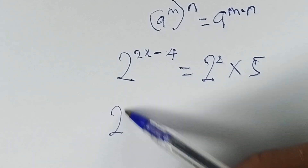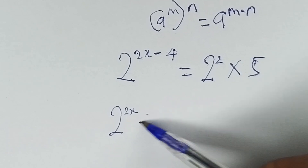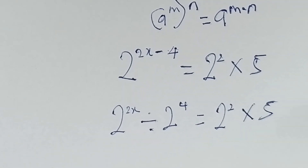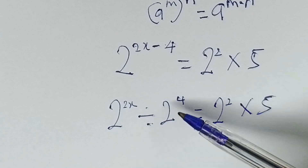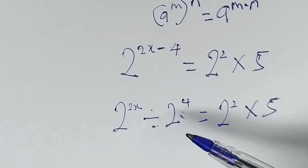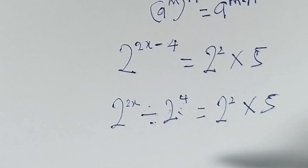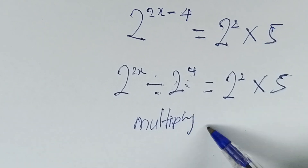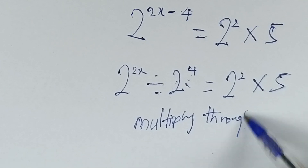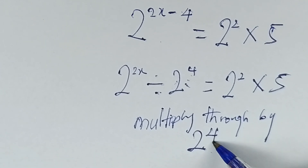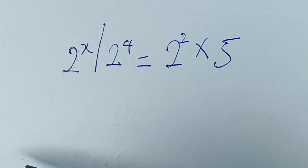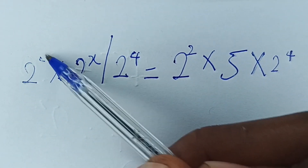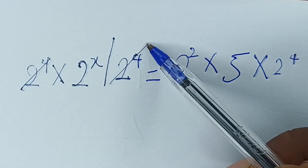Now 2 raised to power 2x minus 4 can be expressed as 2 raised to power 2x divided by 2 raised to power 4, equal to 2 raised to power 2 times 5. In order to eliminate this division, we multiply both sides by 2 raised to power 4. Multiplying through by 2 raised to power 4, we get 2 raised to power 2x on the left, and on the right, 2 raised to power 4 times 2 raised to power 4.